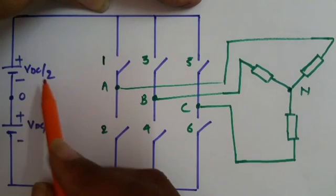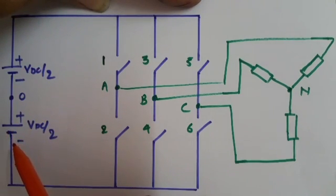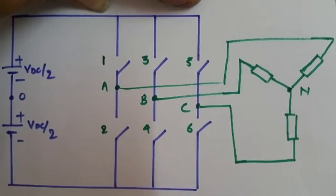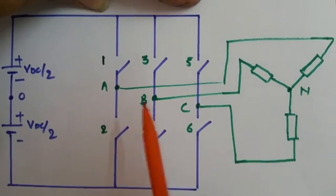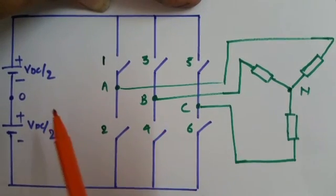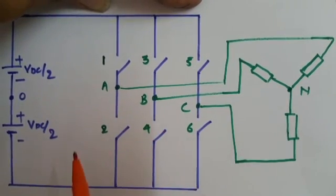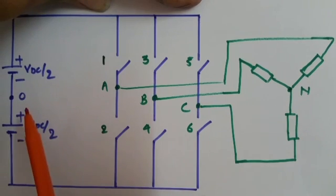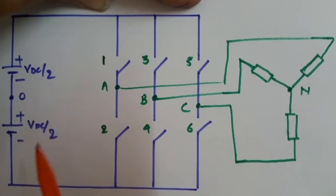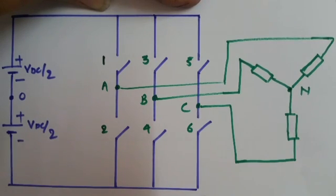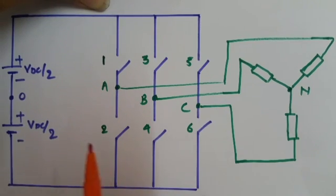Here, this DC signal is what we are giving to the inverter and we just want to convert that into an AC signal. Here we are converting to a 3-phase AC signal at the output side from VDC. Now, I have bisected this VDC into two parts — VDC/2 and VDC/2 — to calculate how we can have the output waveform.